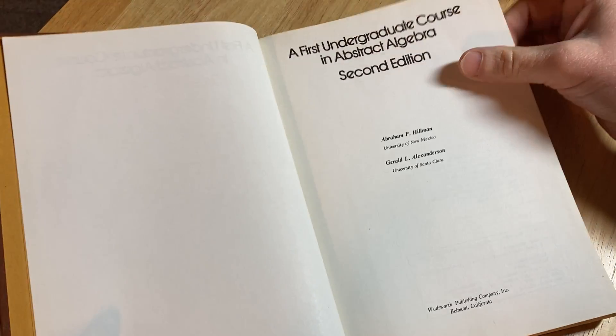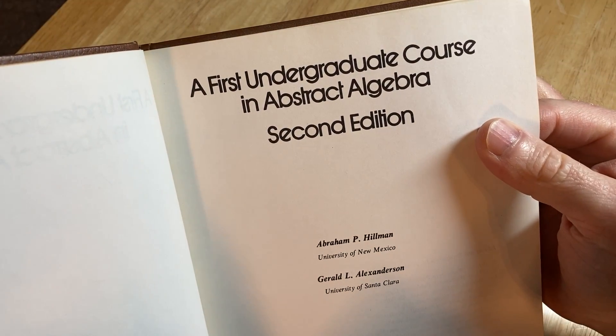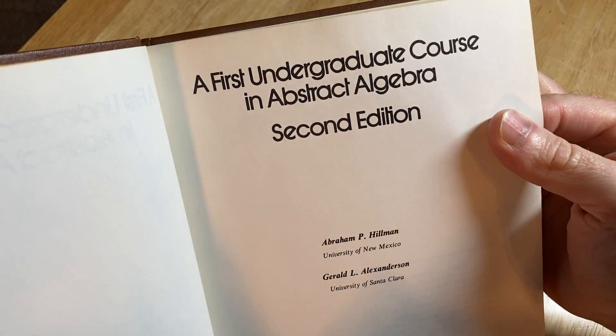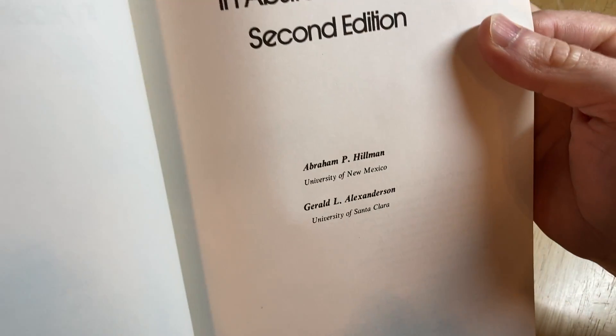Old book, I'm gonna guess 80s, 70s. I don't recall the age. I think it's from the 80s. A First Undergraduate Course in Abstract Algebra, second edition, Wadsworth Publishing Company, Inc., Belmont, California.